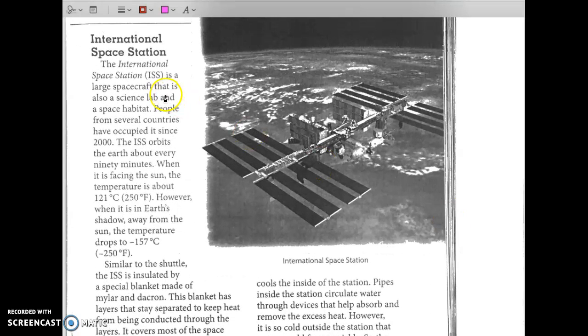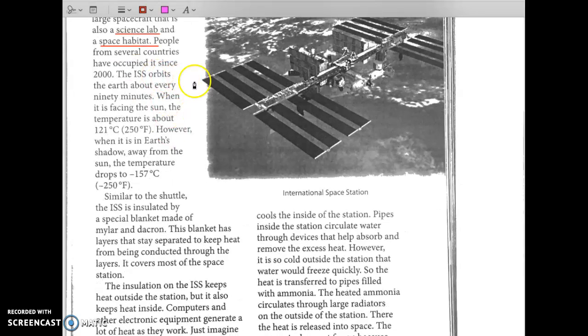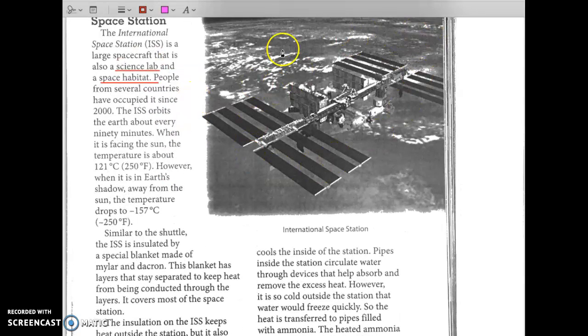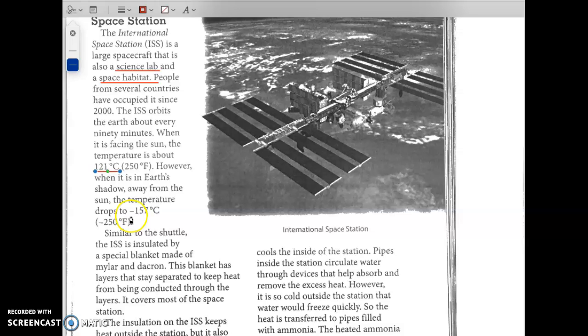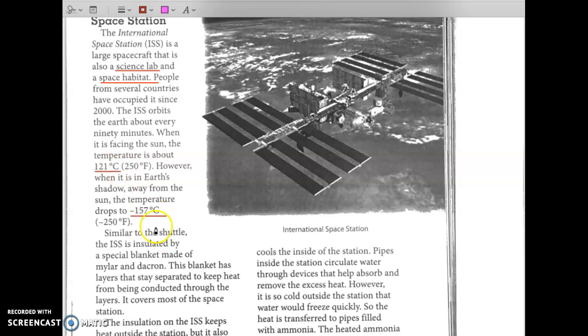Now let's read about ISS, International Space Station. It's a large spacecraft that's also a science lab and a space habitat where people live. People from several countries have occupied it or lived in it since 2000. The ISS orbits the earth about every 90 minutes. When it's facing the sun, the temperature is about 121 degrees Celsius. However, when it's in the earth's shadow away from the sun, the temperature drops to negative 157 degrees Celsius. Wow, think about that. Talk about a temperature change.